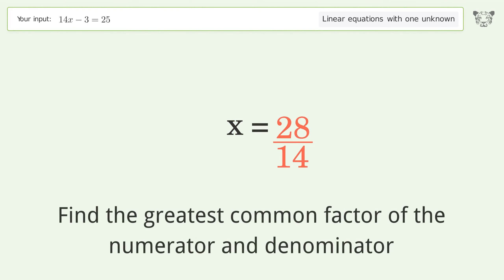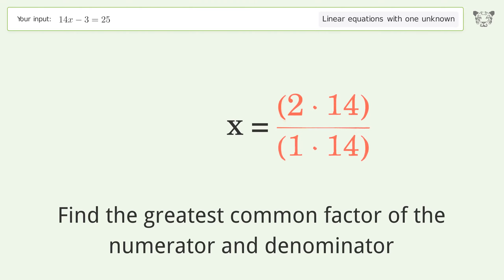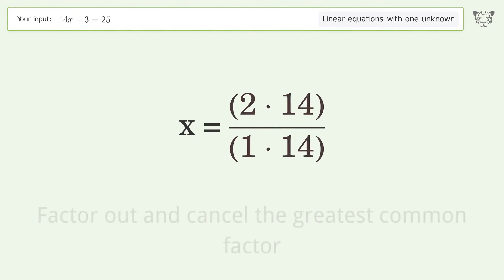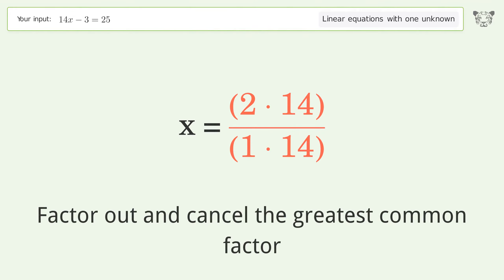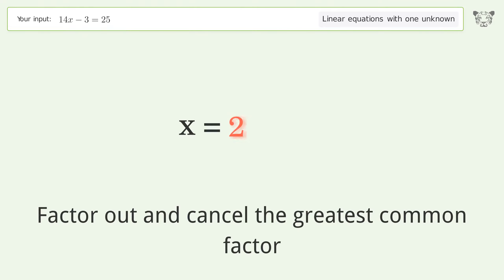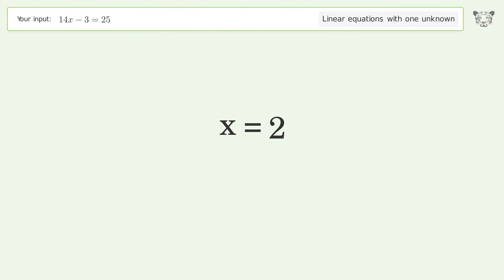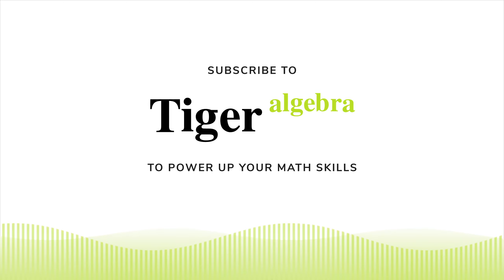Simplify the fraction by finding the greatest common factor of the numerator and denominator. Factor out and cancel the greatest common factor, and so the final result is x equals 2.